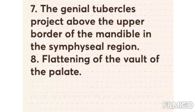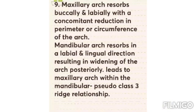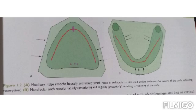The genial tubercles project above the upper border of the mandible in the symphysial region. Flattening of the vault of the palate occurs — normally U-shaped, it appears flattened after resorption. The maxillary arch resorbs buccally and labially with a reduction in arch perimeter, while the mandibular arch resorbs labially and lingually, resulting in widening of the arch, leading to a pseudo Class 3 ridge relationship.